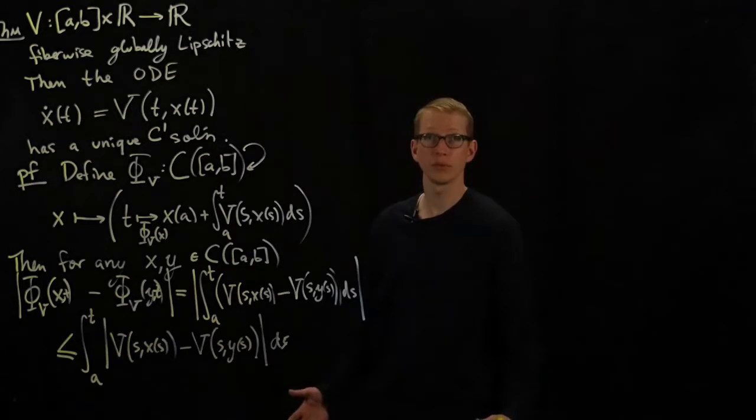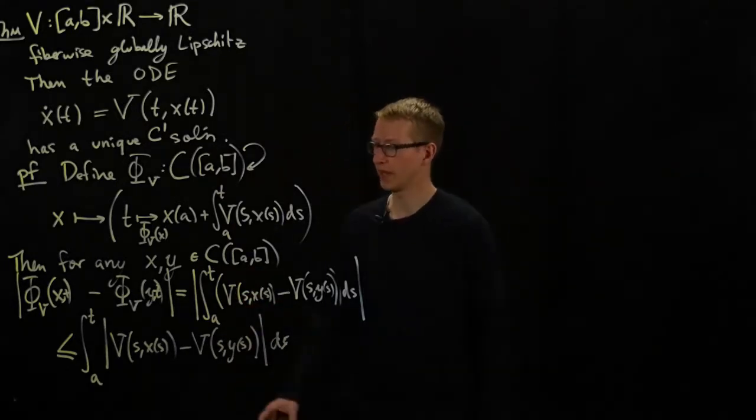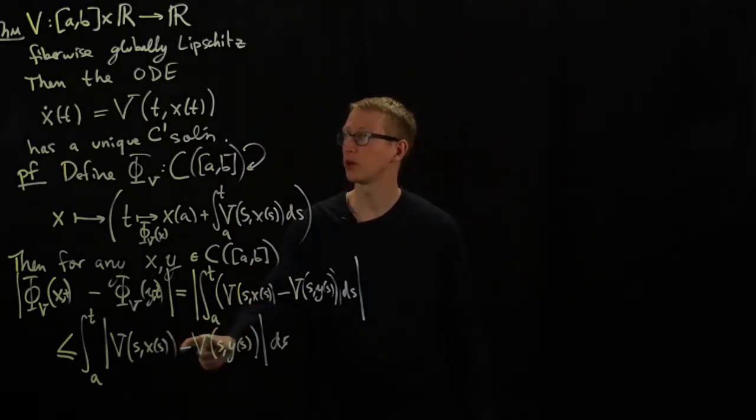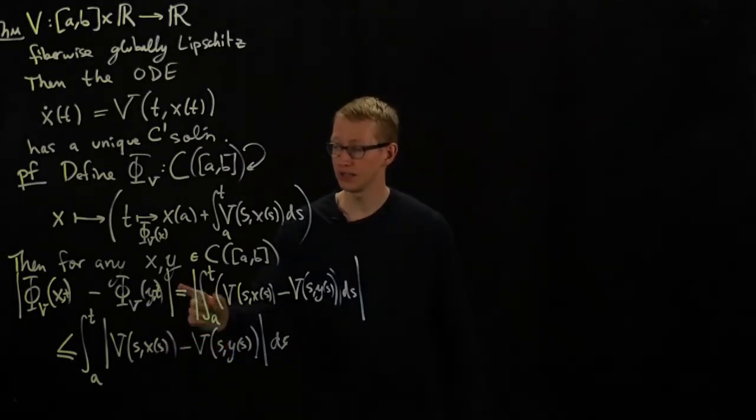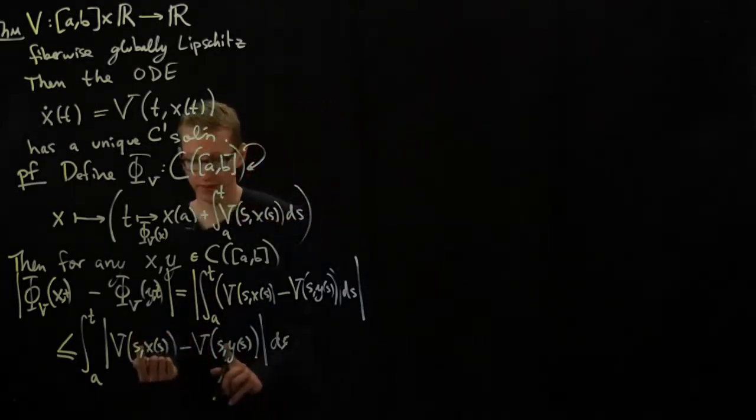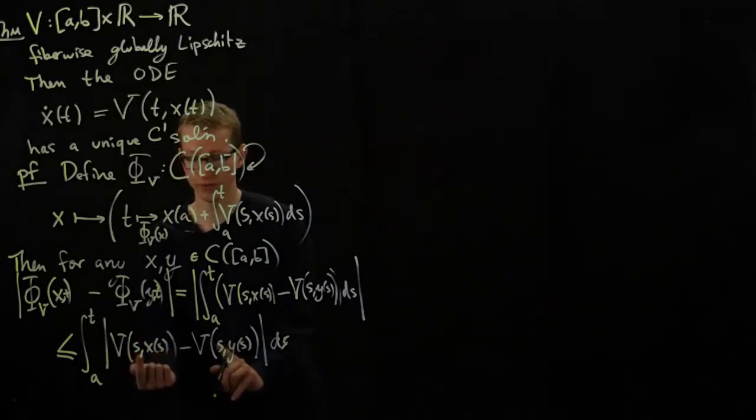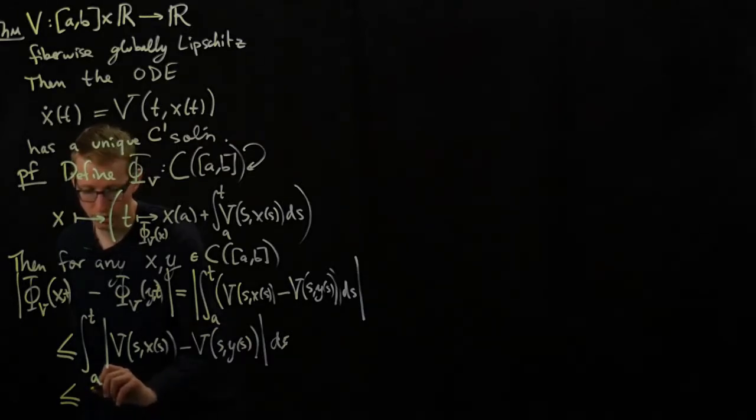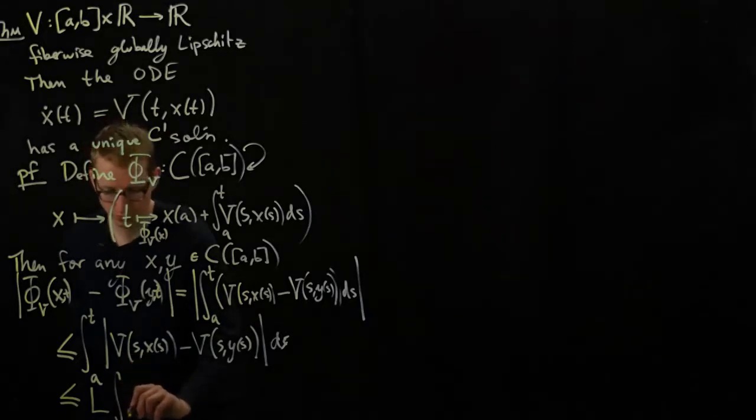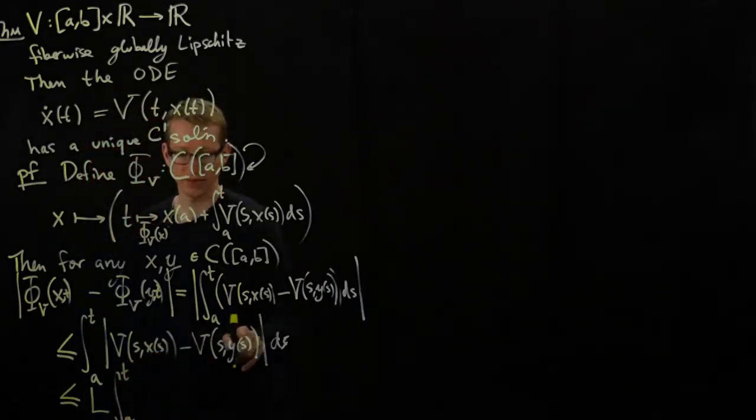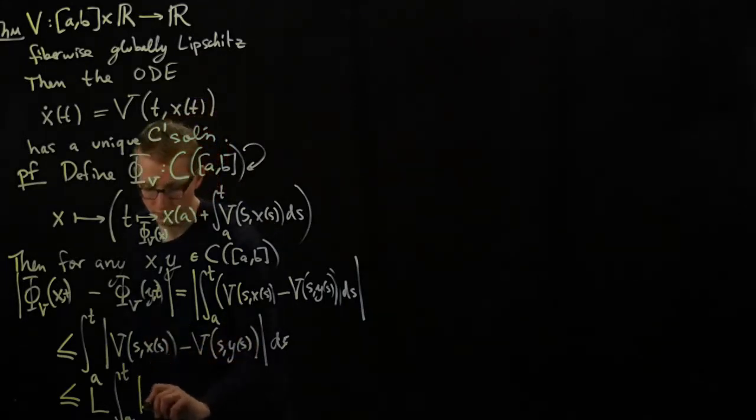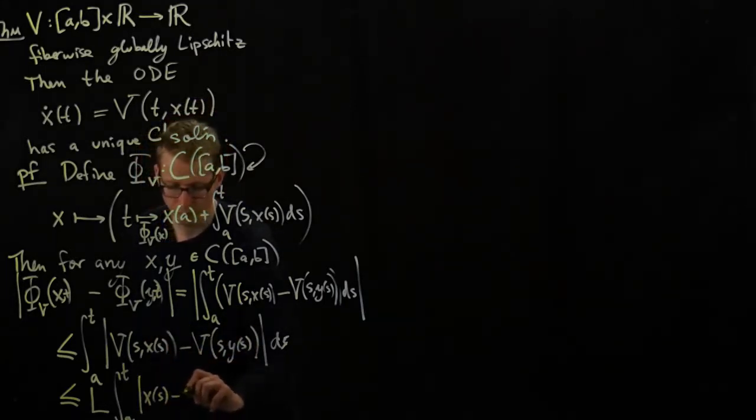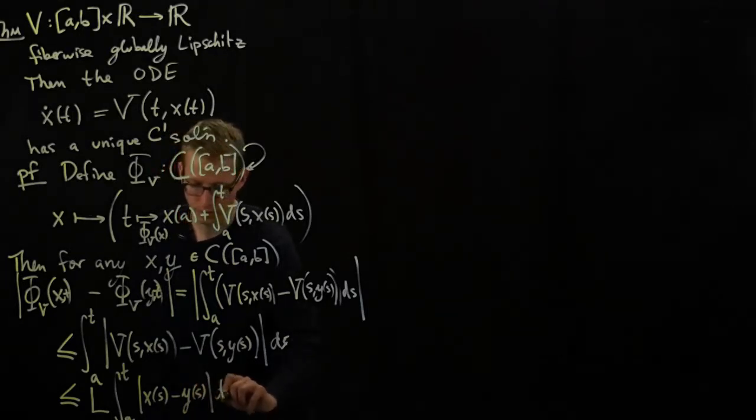So this is one of the properties of the ordinary Riemann integral. Now, when we look at this term, we can actually use our Lipschitz condition here. And notice that we have the same thing for a fixed point, S. So using that condition, and let's call that Lipschitz constant, just as before, L, the integral from A to T. And what we have here is the distance between these two points, x s minus y s, ds.